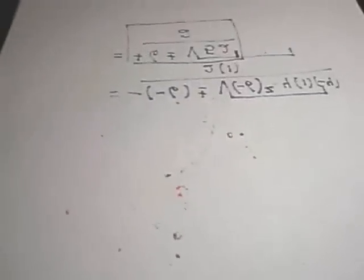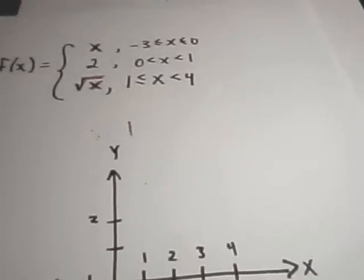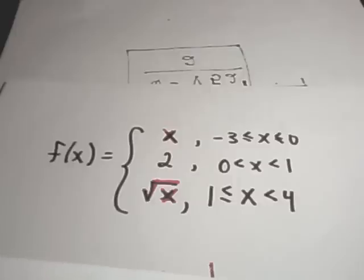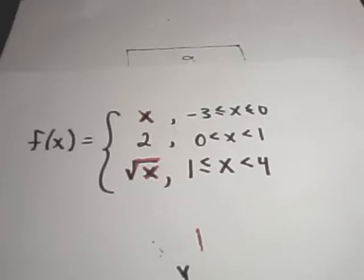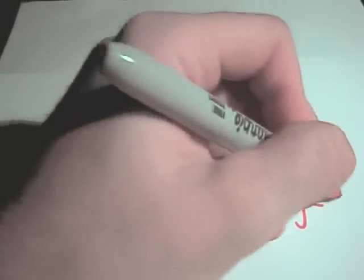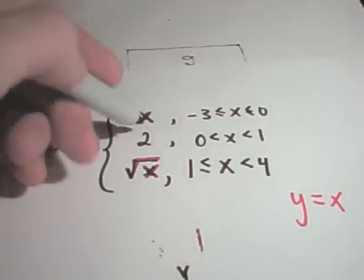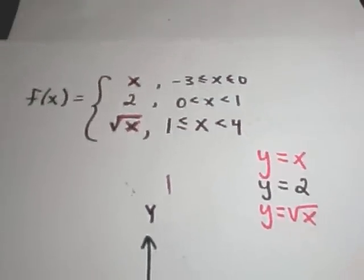Let's look at another example — this time with three parts. We have y equals x, which I'll graph in red; y equals 2, in black; and y equals square root of x, again in red, just to help distinguish the pieces.